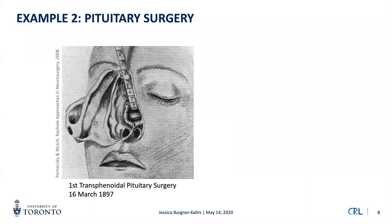The second example is pituitary surgery. The pituitary is a tiny gland right at the center of the brain, producing important hormones — for example, for thyroid function. Unfortunately, it's hard to access. It's also a location of tumors that are most often benign but slow-growing. With our aging society, these tumors can become a big issue because they may put pressure on the optic nerves, which cross right at the pituitary, often requiring surgical removal.